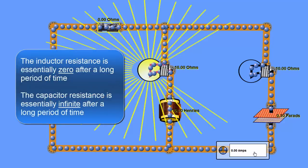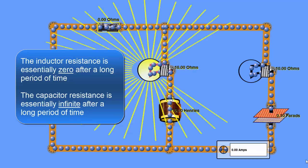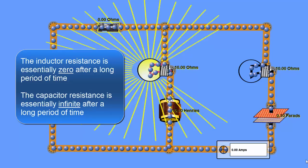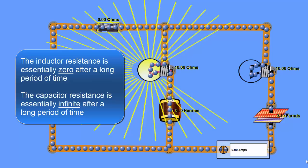The current over here on the capacitor side is zero amps. The thing to keep in mind with capacitors is that the long-term current through a capacitor with a DC supply approaches zero.